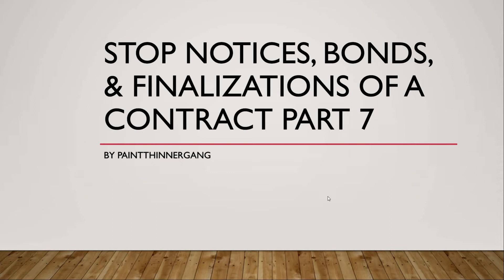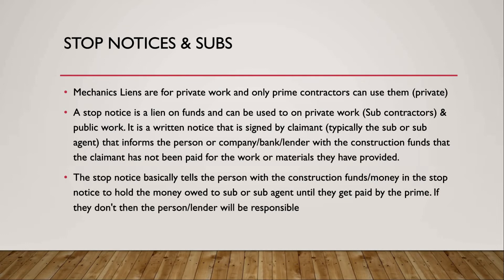Welcome back. This is my seventh video, part four of how to get your license in the state of California. In this video we're going to talk about stop notices, bonds, and finalizations of a contract. This is important because to complete a contract there are certain steps you need to go through, or else it could be used against you if you have a difficult client or another contractor whose part doesn't go through — causing you headaches and loss of time and money.